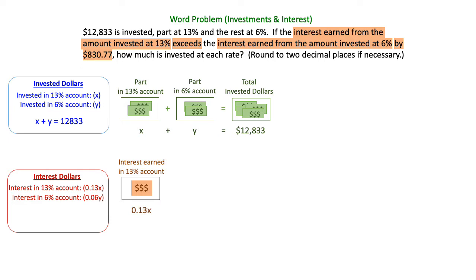So we've got interest earned in the 13% account, 0.13X. We're going to subtract the interest earned in the 6% account, 0.06Y. And the reason we're doing that is the word exceeds. One account exceeds the other account. So that's going to be a difference equation.